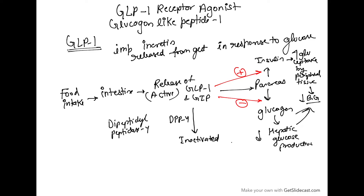Today we are going to discuss a very important hypoglycemic agent, antidiabetic agent — the GLP-1 receptor agonist, or glucagon-like peptide-1 receptor agonist. So glucagon-like peptide-1, what is it? It is an incretin.